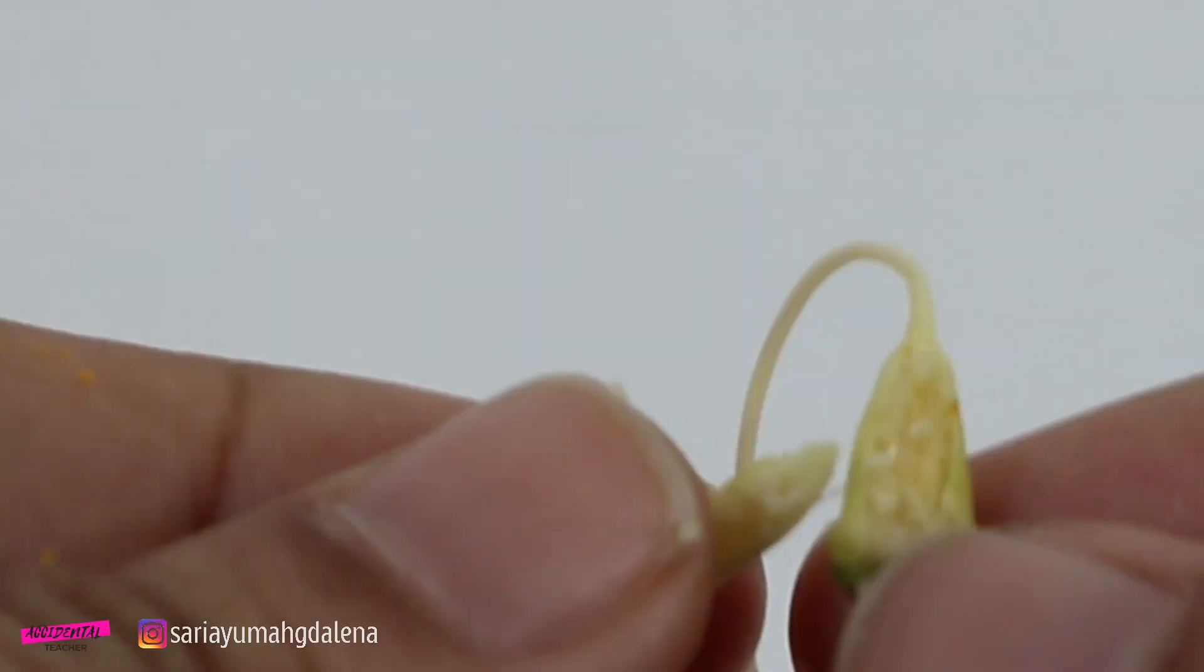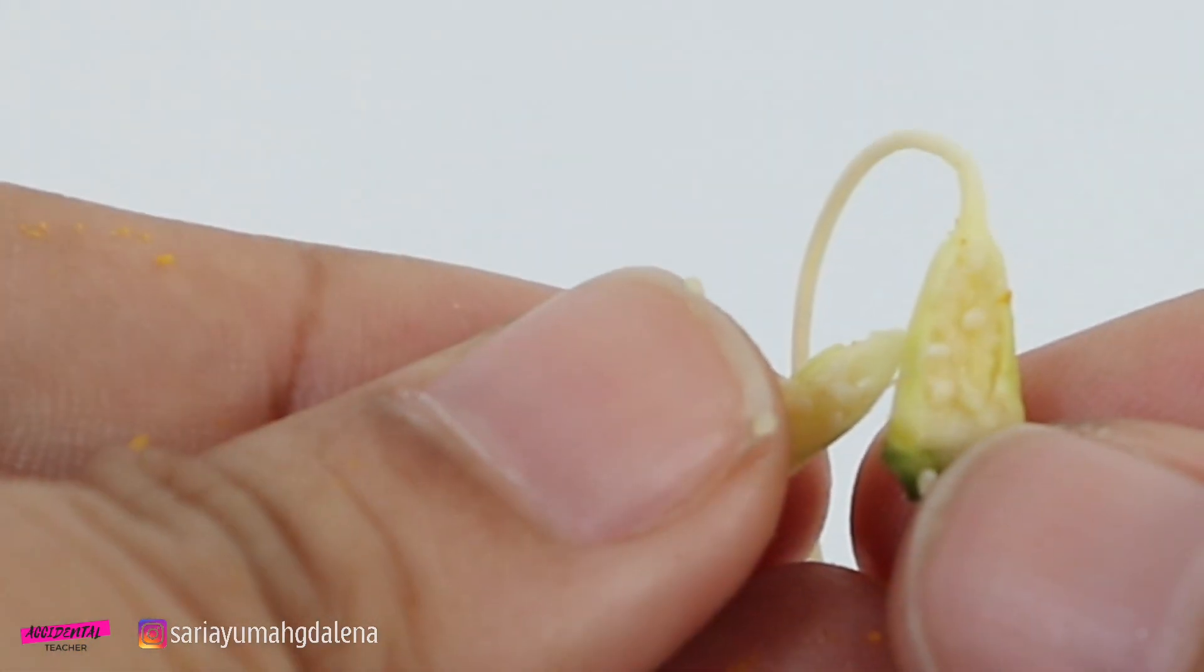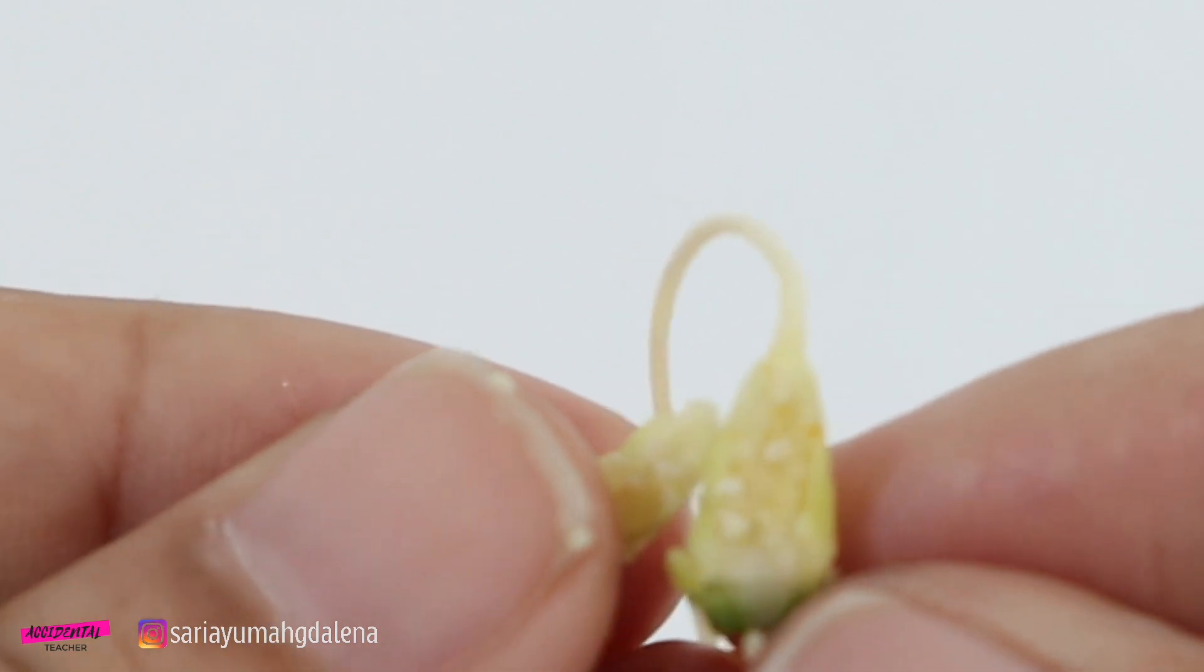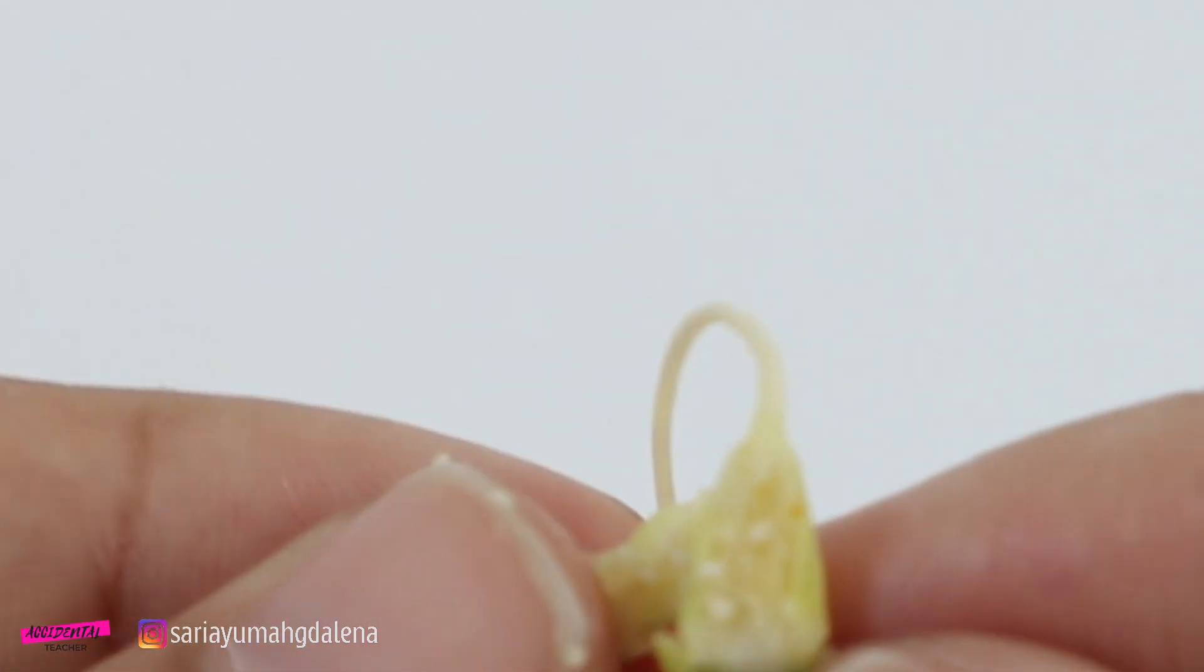So inside the ovule, there are a lot of female reproductive part. Consists of so many eggs which later on will develop into a seed.